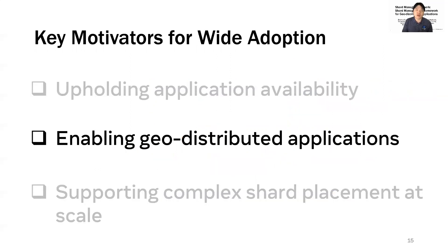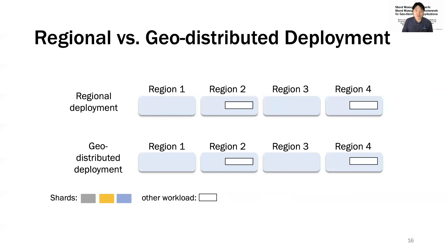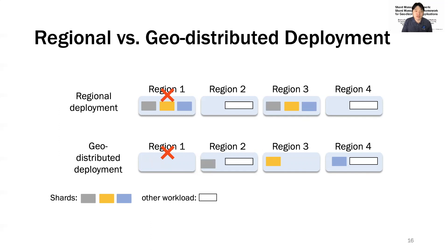The next key motivator for Shard Manager's wide adoption is its ability to support geo-distributed applications. With Shard Manager, an application can be deployed either in regional mode or in geo-distributed mode. With regional deployment, a complete set of copies is hosted in a region and may be duplicated to provide redundancy, but shards cannot move from one region to another. With geo-distributed deployment, shards may be placed across multiple regions and migrate from one to another. For example, if a whole-region outage occurs, with geo-distributed deployment, the shards on the failed region can be easily rebuilt in another region.